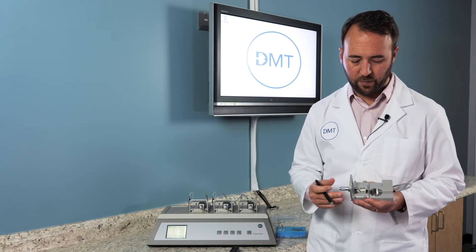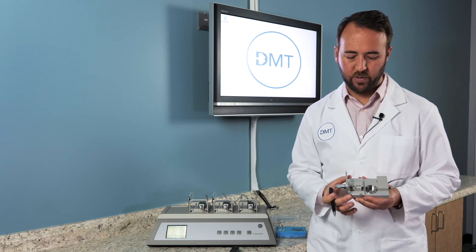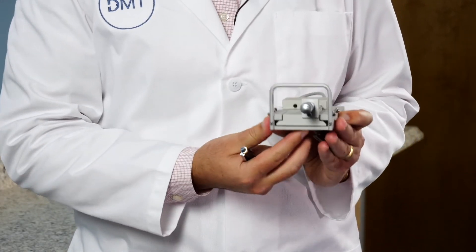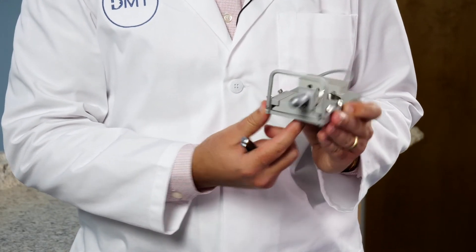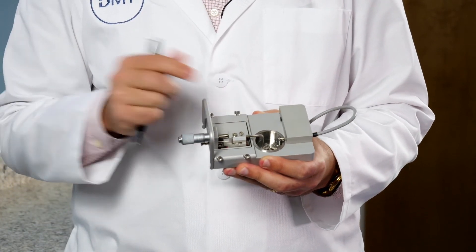As far as the fine adjustments, you have four screws on the chamber itself. Now there is a pivot point on the bottom of the chamber, where as you tighten these screws, you are tightening around that pivot point.